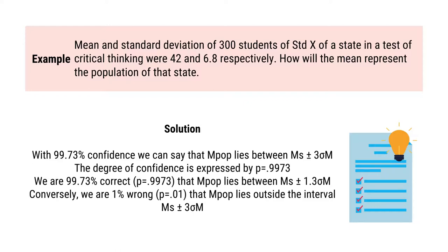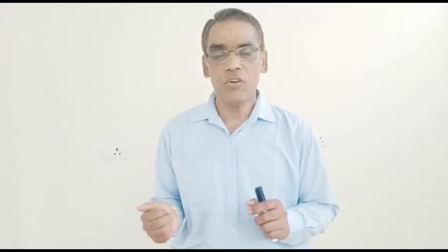The degree of confidence is expressed by the probability, so P equals 0.9973. We are 99.73% correct that the population mean lies between sample mean plus minus 3 sigma m. Conversely, we are approximately 0.27% wrong — that the population mean lies outside the interval sample mean plus minus 3 sigma m.